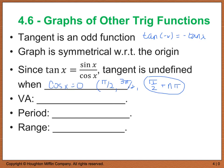Vertical asymptotes occur at increments of pi/2 plus n*pi. The period is going to be pi — every pi unit is going to repeat. Our range is going to be from negative infinity to positive infinity, which is the same as saying all real numbers, because there is no limit to what we can have for y.